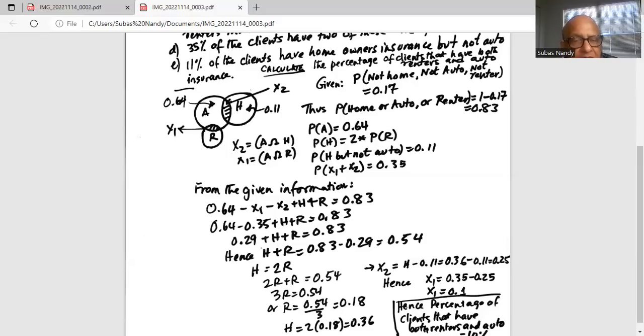Homeowners insurance is given as two times renter. So twice renter plus renter is 0.54. That means three R equals 0.54. So renter equals 0.54 by 3 is 0.18. Now homeowners insurance will be twice that amount, 0.36.